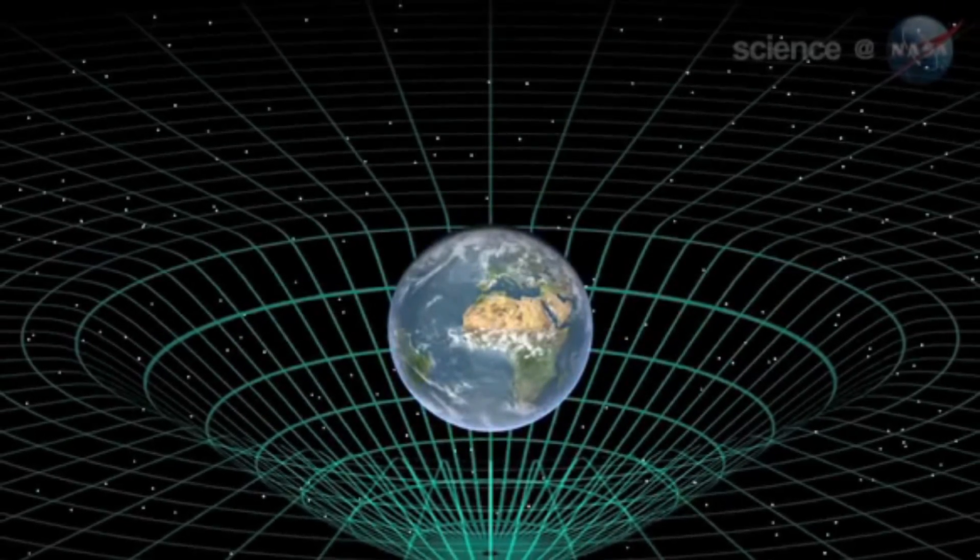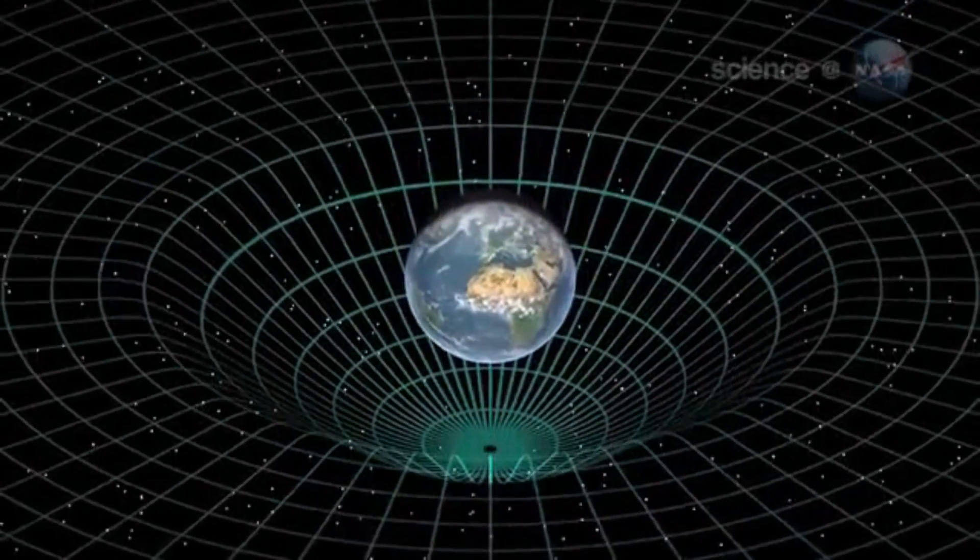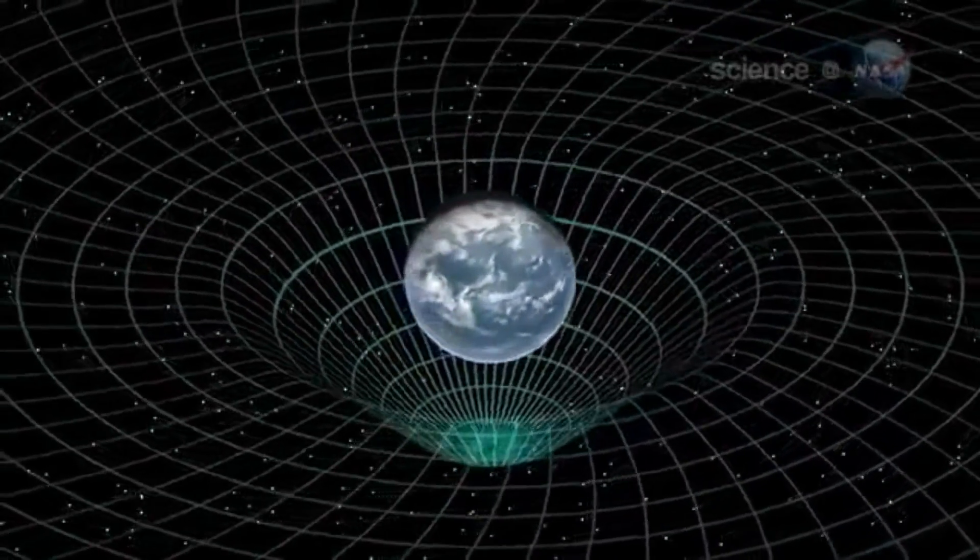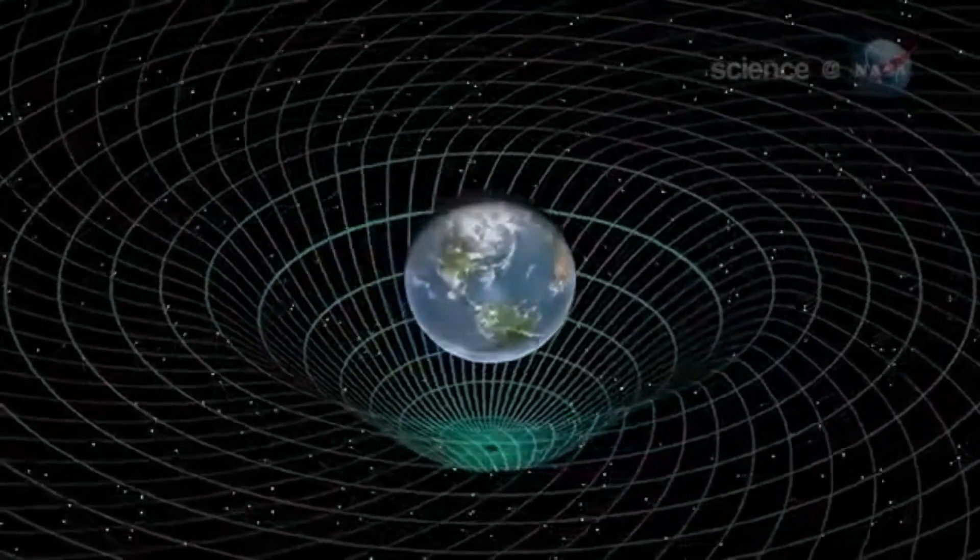This curvature is what we perceive as gravity. The more massive an object is, the more it curves space-time. This is why planets orbit the sun. The sun's mass curves space-time so much that the planets are forced to follow curved paths around it.